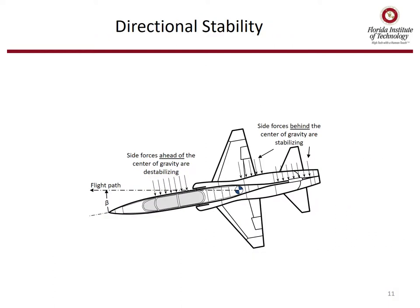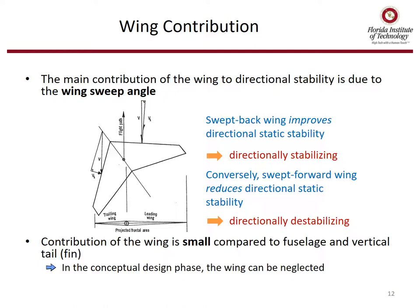If we look at the aircraft from above, side forces ahead of the center of gravity are destabilizing, while side forces behind the center of gravity are stabilizing. The main contribution of the wing to directional stability is due to any sweep angle. Swept back wings improve directional static stability; conversely, swept forward wings like the X-29 reduce it. But the wing's contribution is small compared to the fuselage and vertical tail, so in conceptual design the wing can often be neglected.